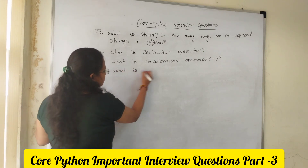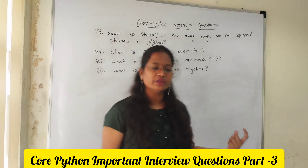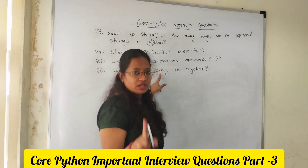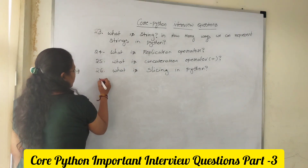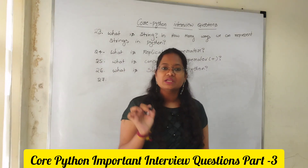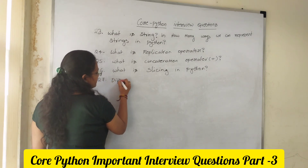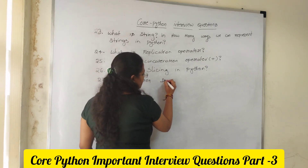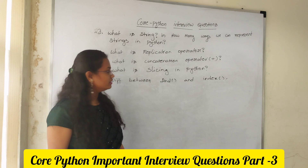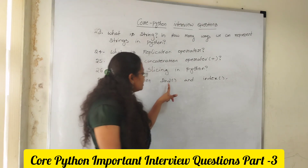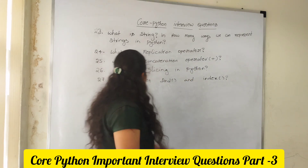The 26th question: what is slicing in Python? Based on index positions, you retrieve a substring. Slicing is also applied on lists, tuples, and strings. Among the important string methods, the first question is: differentiate between the find method and the index method. Both are used to find the index position of a character, but if the position is not found, find returns -1 while index returns an error.